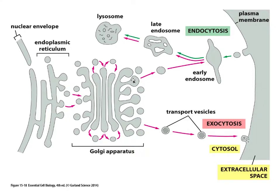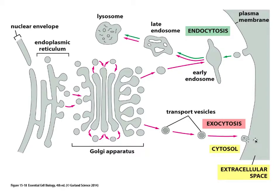Eventually, vesicles are pinched off to travel down two alternative pathways. The first pathway does not end at the membrane of the cell — it fuses with incoming vesicles to form endosomes and eventually lysosomes. There is no direct passage between a lysosome and the Golgi or the endoplasmic reticulum. The second pathway from the Golgi goes through transport vesicles and ends up fusing with the plasma membrane, where the contents can be exported out of the cell through exocytosis.